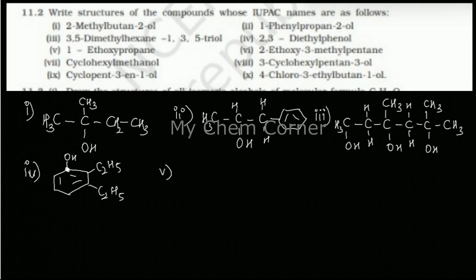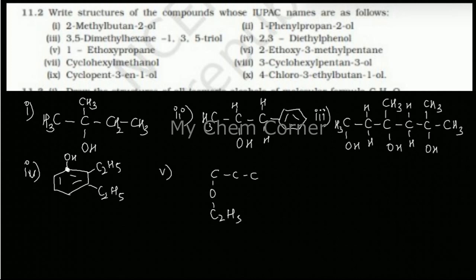The fifth one is 1-ethoxypropane. Here propane is the parent hydrocarbon, so write a three-carbon chain. It says 1-ethoxy, meaning this is going to be an ether — at position 1 there will be an oxygen bonded to an ethane chain, which is the ethoxy part. Fill in the remaining hydrogens and that completes the fifth structure, an ether molecule.